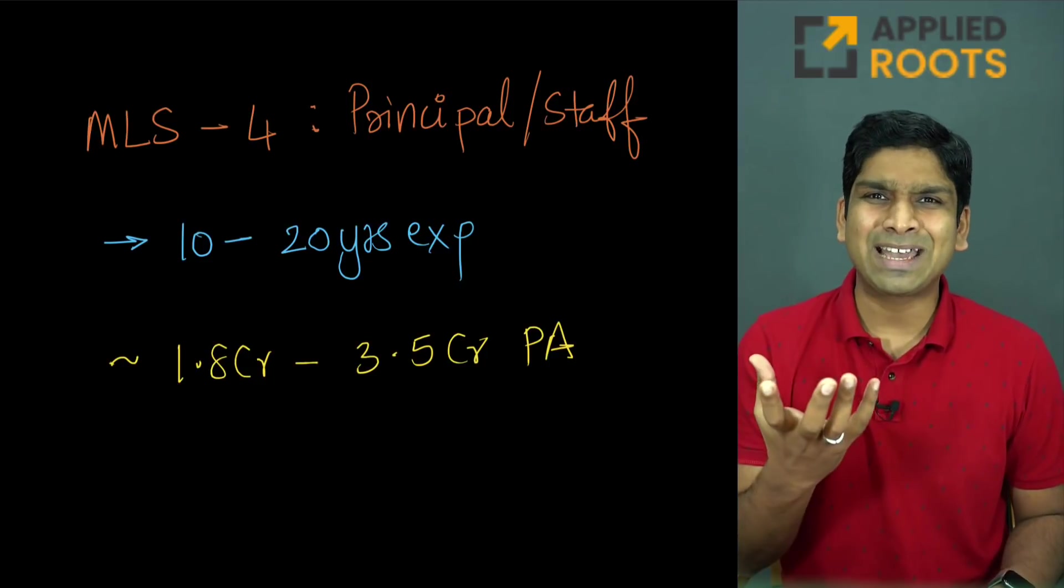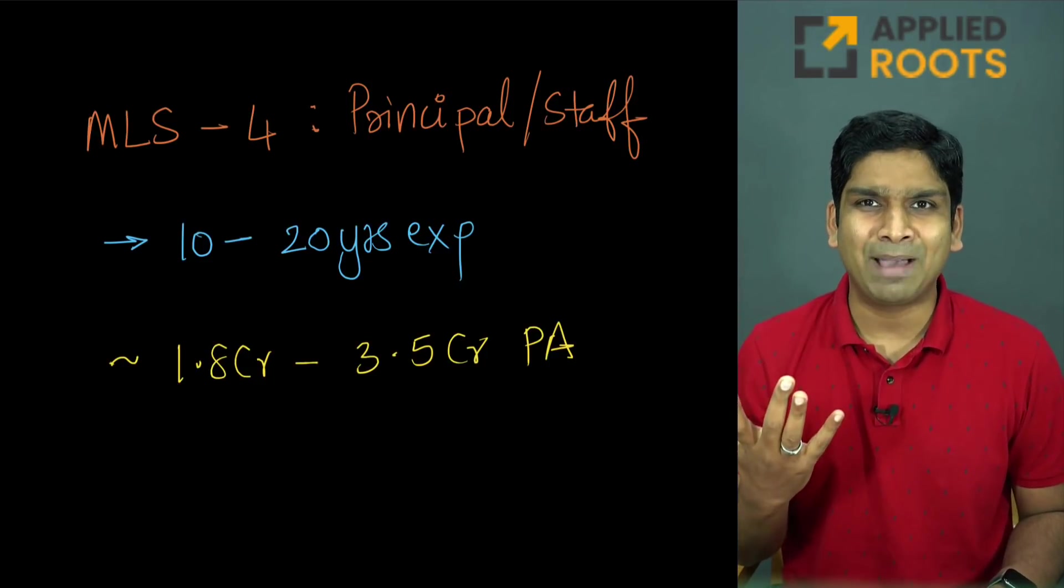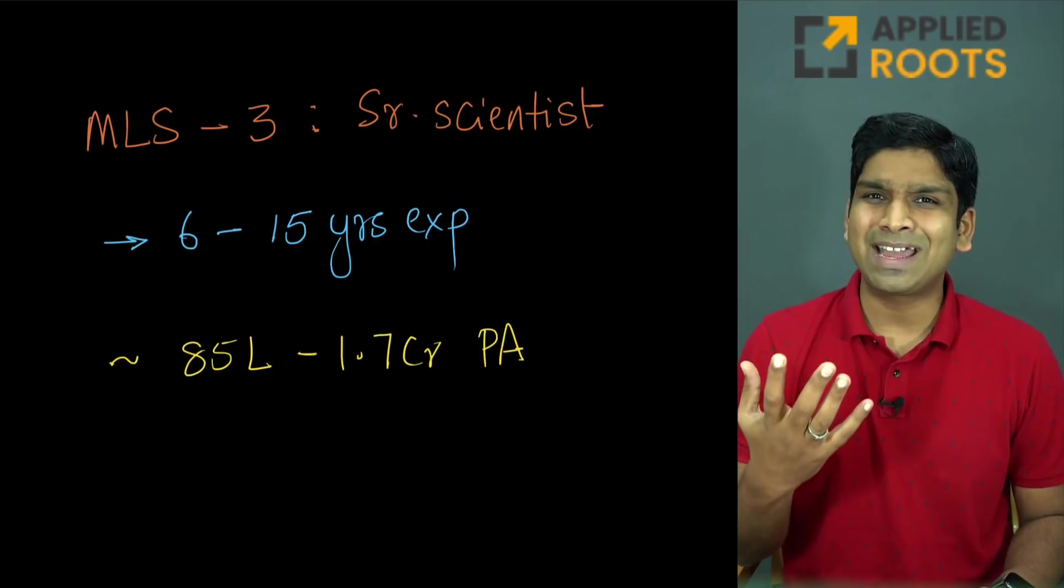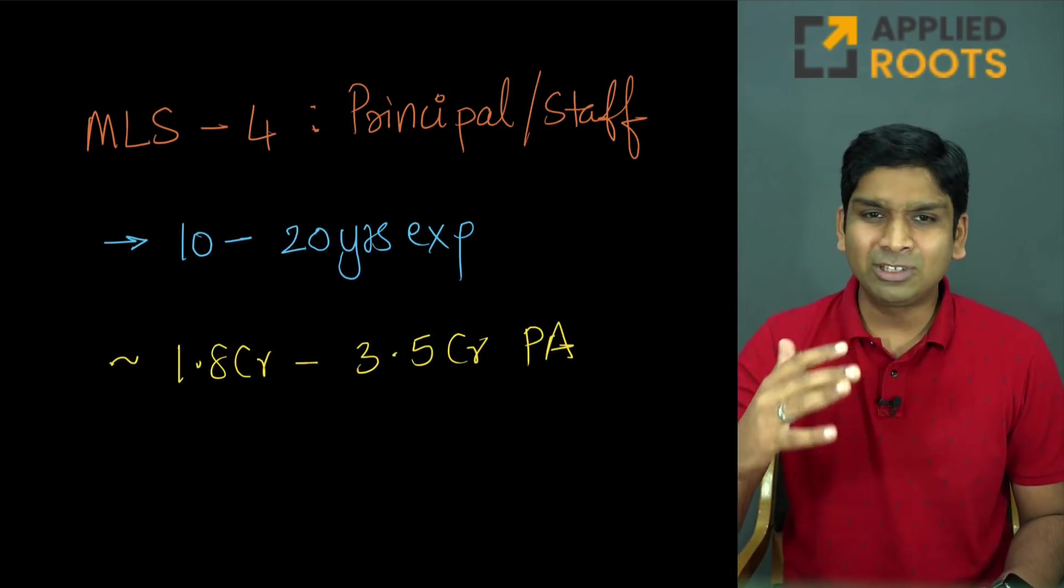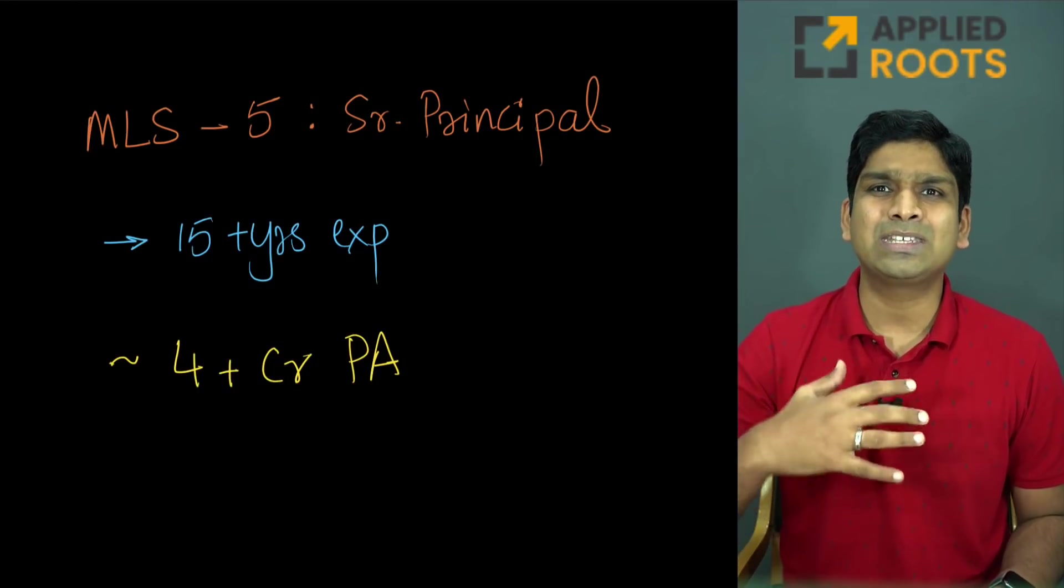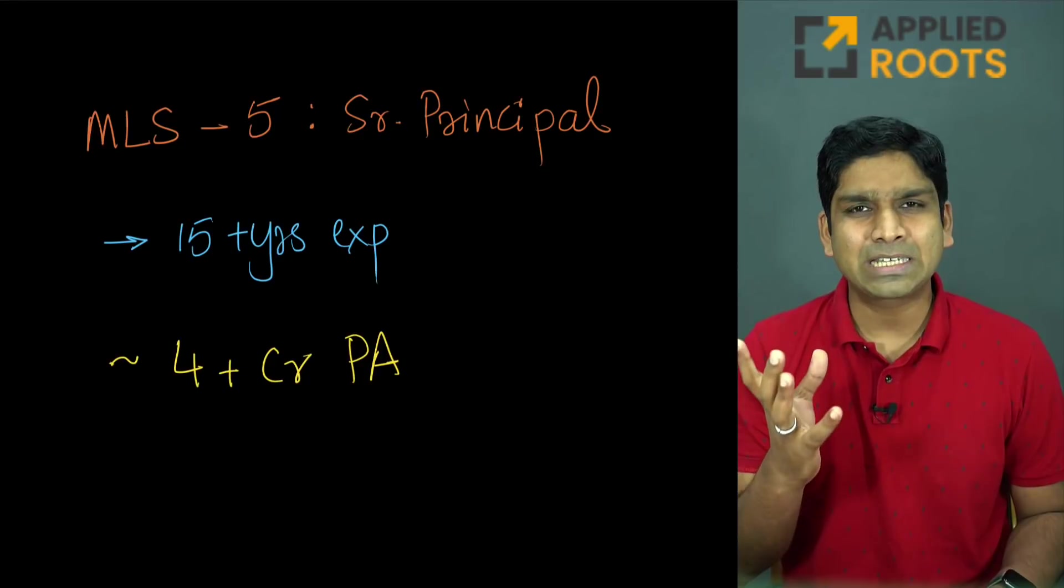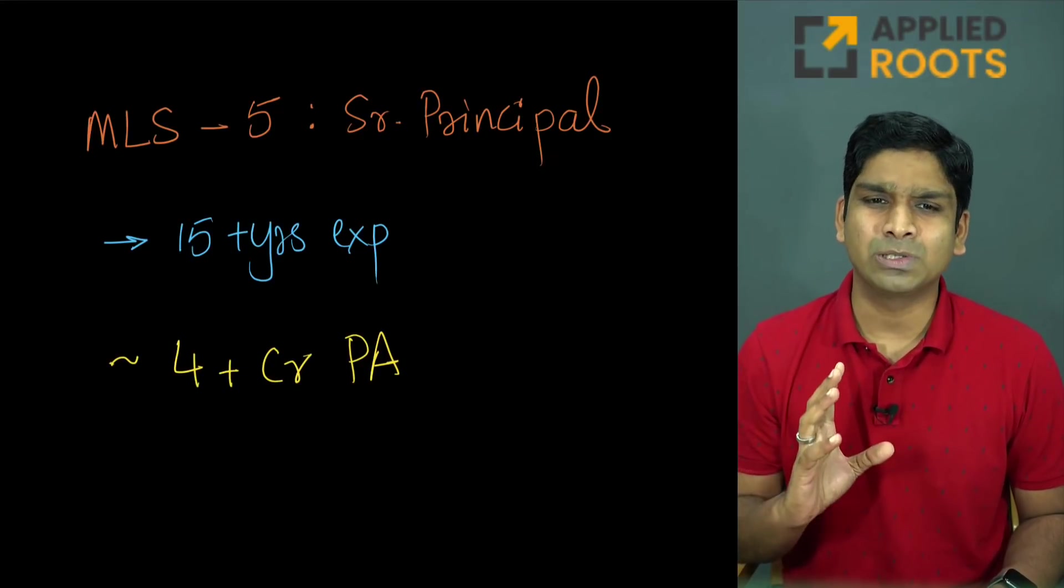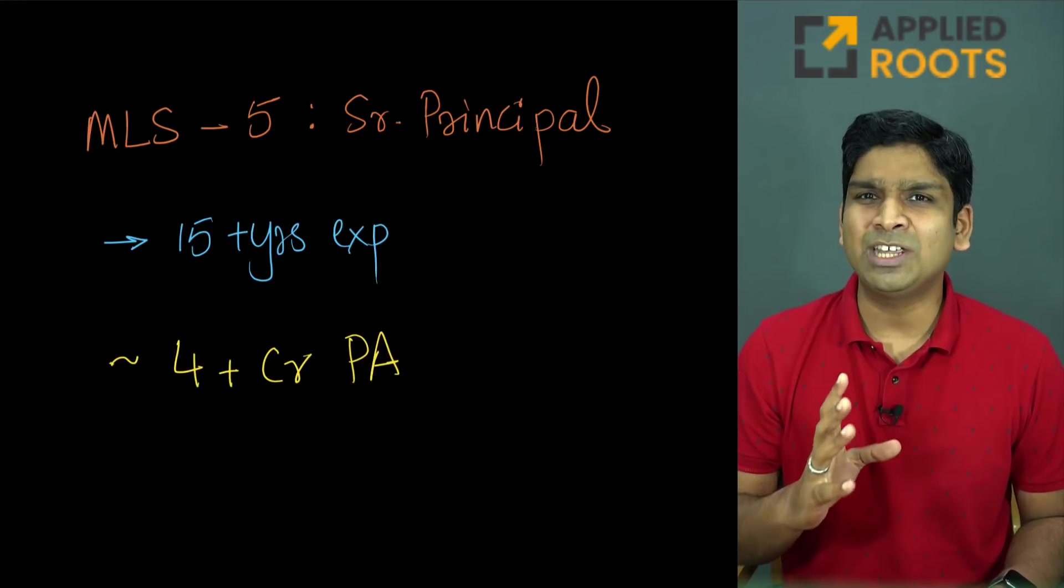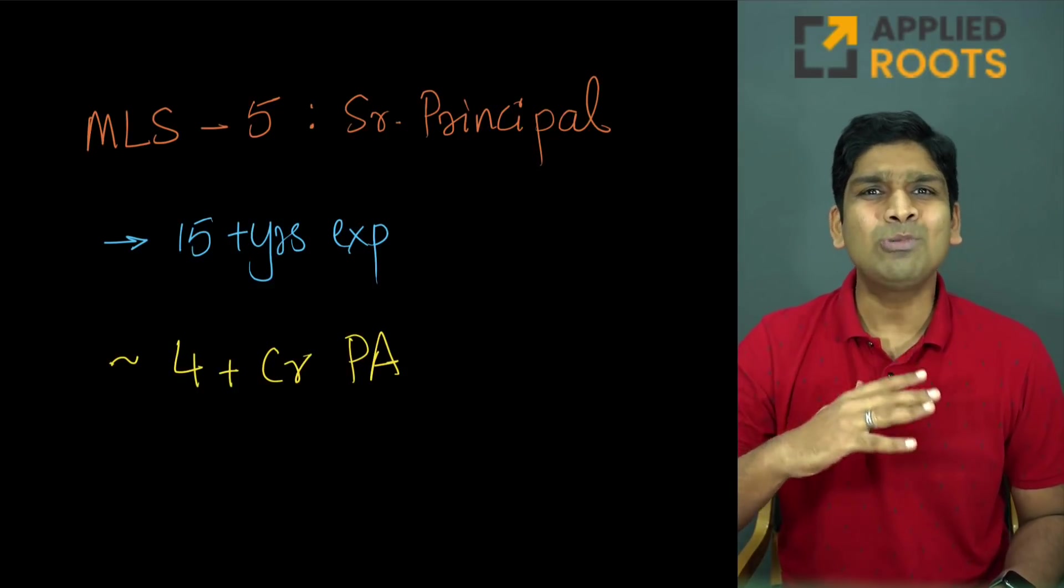The typical range is anywhere from 1.5 to 3.5 crores per annum. Your principal scientists, if you want to compare them to the managerial roles, they're typically like your senior managers. Similarly, your senior scientists are typically like your managers. After principal scientist comes your senior principal scientists or senior staff scientists, also called applied scientist five or machine learning scientist five roles. They typically have 15 years of experience or more, and their compensations range from four crores to above.